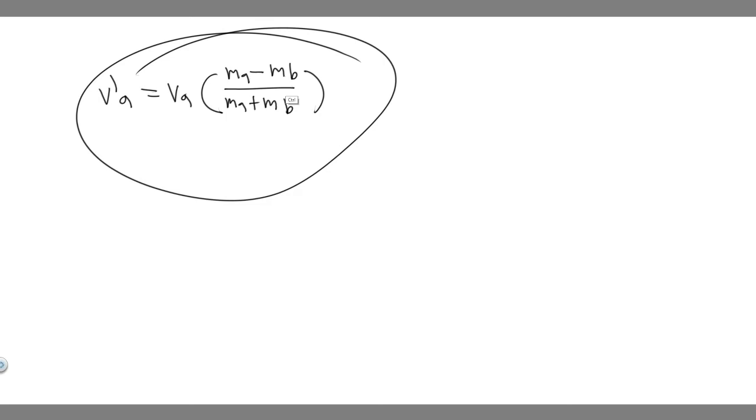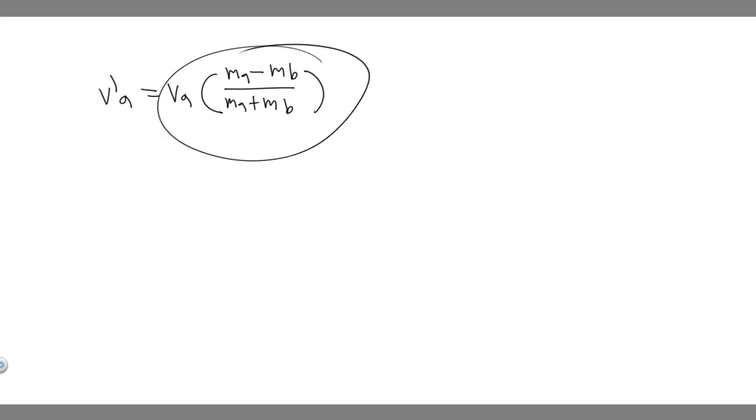If we can manipulate it in this form, we say v prime a equals va multiplied by ma minus mb over ma plus mb. So this is the formula you're going to have. If you go ahead and manipulate your equation, this is what you're going to get.